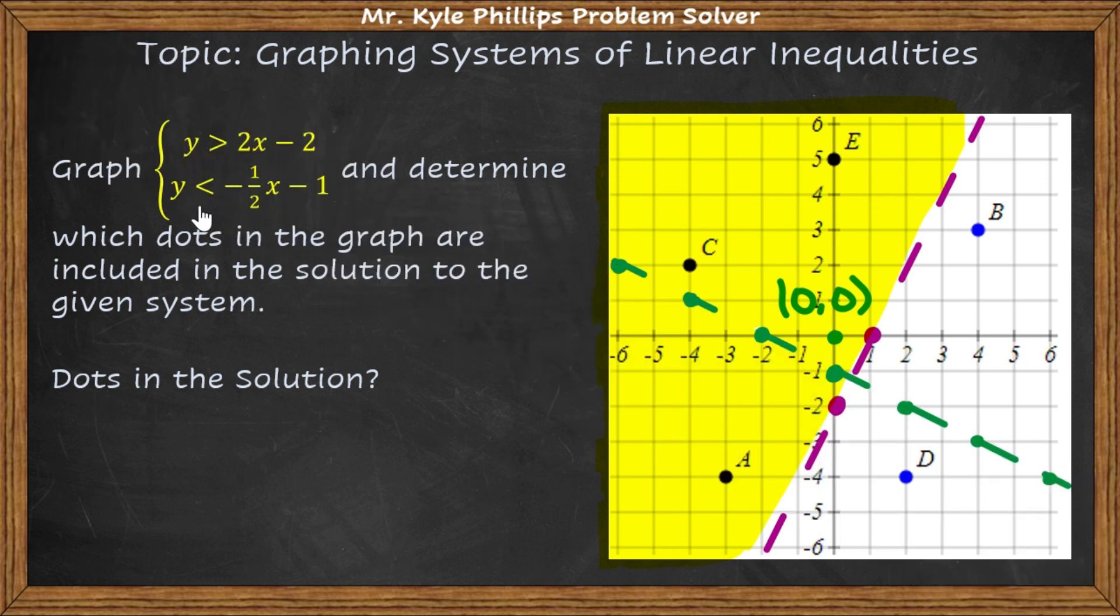So here I will dot my line. And this is less than, so I'm shading below the line, or you could pick a test point. Let's say I plug in 0, 0. If I plug in 0 here, is 0 less than 0 minus 1? So is 0 less than negative 1? Well, that answer is false. 0 is not less than negative 1. So I'm shading on the opposite side of my test point 0, 0.